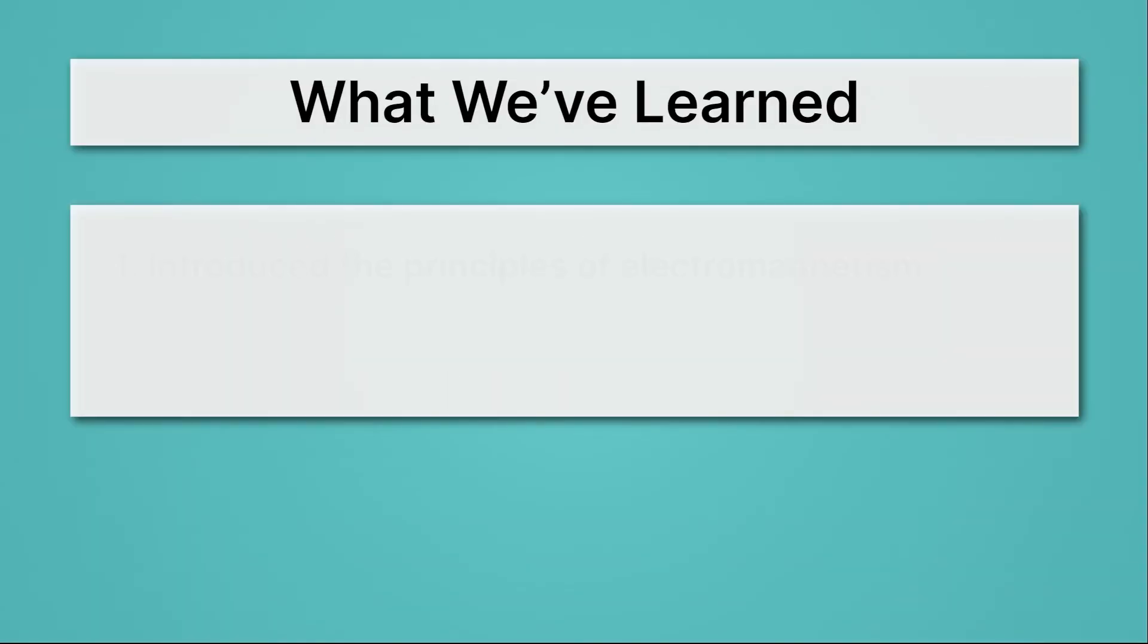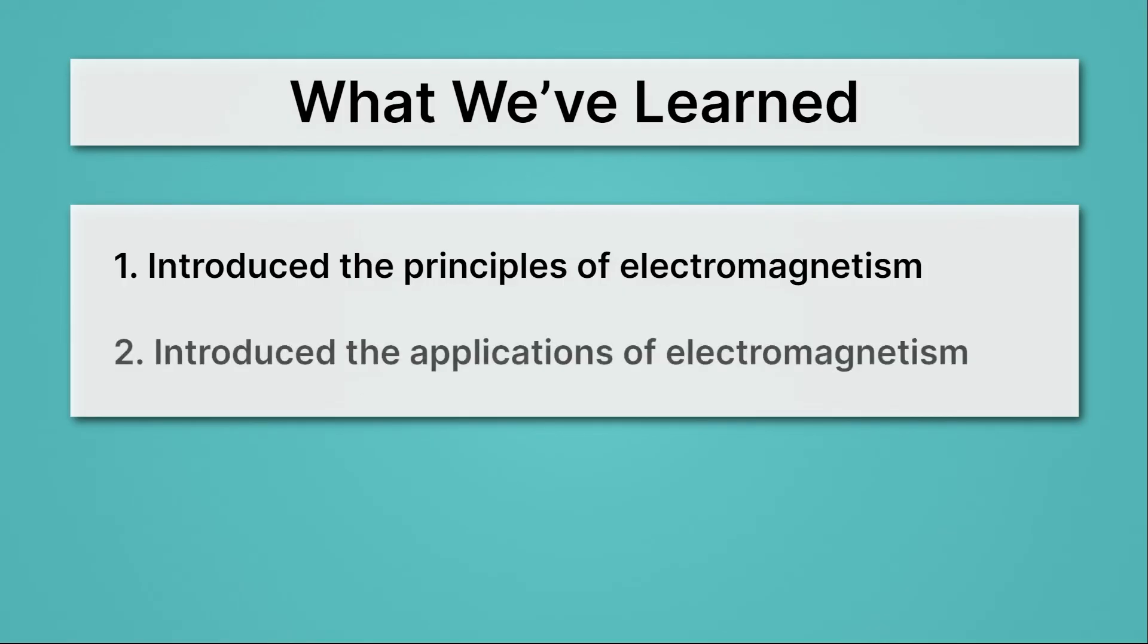Let's review what we've learned. First, we introduced the principles of electromagnetism. We saw that electric charges have the electric force, that magnetic dipoles have the magnetic force, and we learned that you can either make current from magnets or a magnetic field from currents. Lastly, we introduced the applications of electromagnetism, where we saw that we use these in all sorts of ways, like circuits, like power plants, like microphones and speakers.